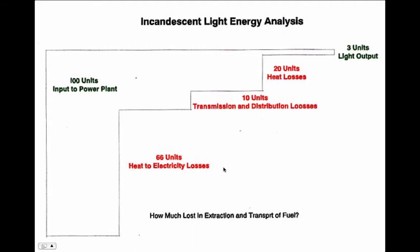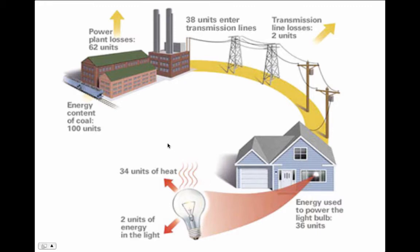Of the 100 units or 100 railroad cars full of coal, only three are providing us with something useful — but we end up having to pay for all of them. Only three cents of every dollar you spend on fuel is actually providing you with light; the rest is just wasted heat. We didn't even talk about how much energy is lost in the extraction and transport of that fuel in the first place. A more graphic diagram shows the same thing: 100 units in, 62 lost at the plant, 36 units reach the light bulb, 34 thrown away as waste heat, and only two units come out as light.